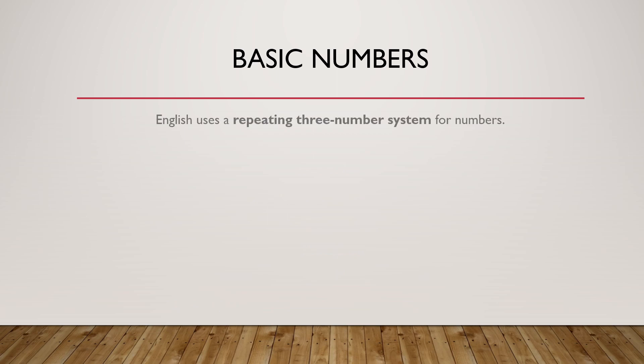English uses a repeating three-number system for numbers. Most three-number sets have family names: trillion, billion, million, thousand. The smallest set has no name.